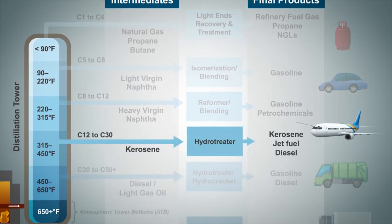Kerosene boils at temperatures ranging between 315 and 450 degrees Fahrenheit. It generally needs to be treated to remove sulfur and can either be blended into diesel or sold as kerosene or jet fuel.